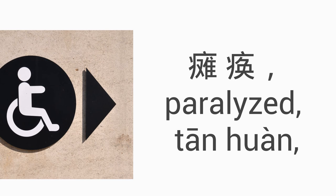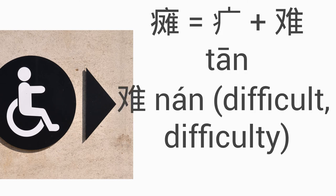Paralyzed is 癱瘓. The character 癱 is 病字頭 plus the word 難, which means difficult or difficulty. So whether a person is half paralyzed or fully paralyzed, it's an illness that causes great difficulties.